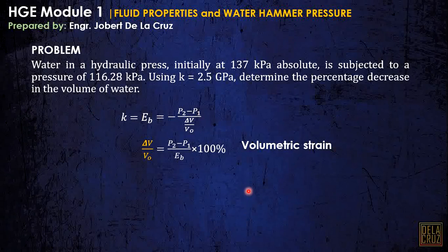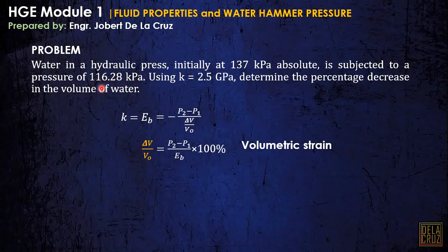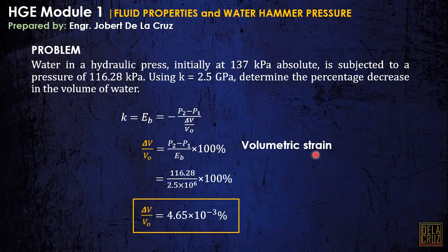Now, what is our P2 and P1? Take note: this value given is not P2 — it is the change in pressure, meaning from P1 to P2. So P2 is 137 plus the change in pressure. Basically, P2 minus P1 is already that given value. Please don't misinterpret this — it is already the change in pressure. After substitution, times 100%, we get the answer.